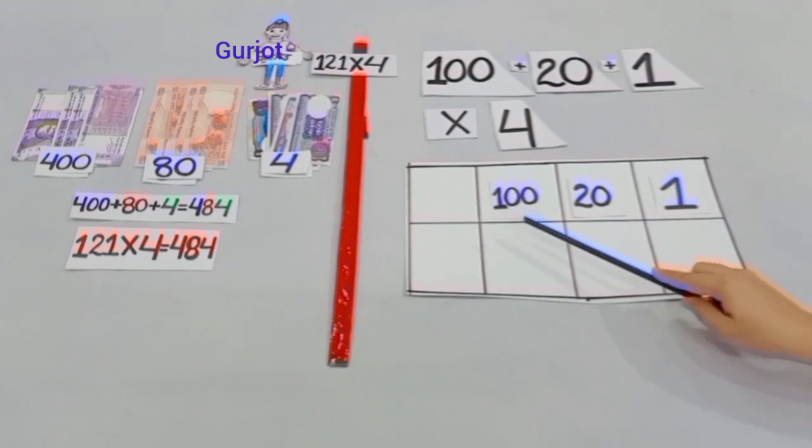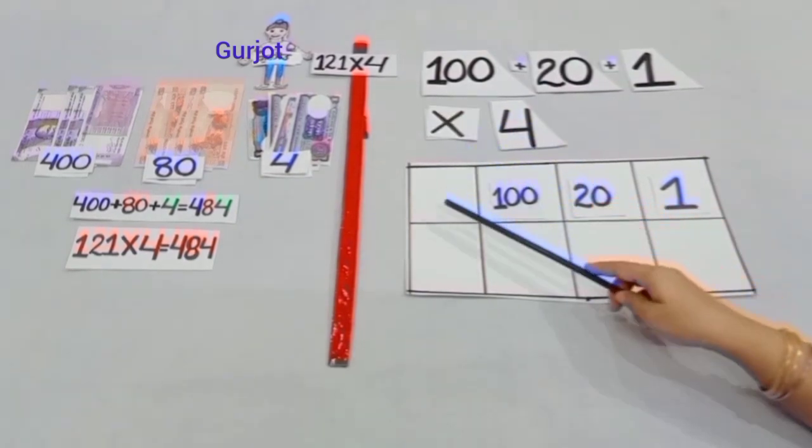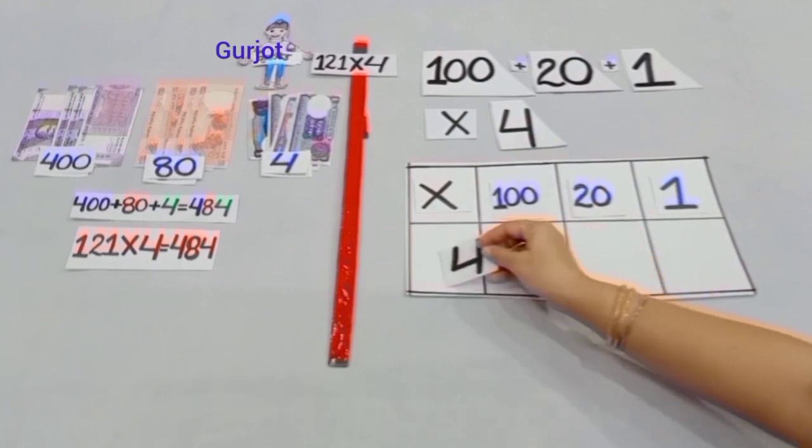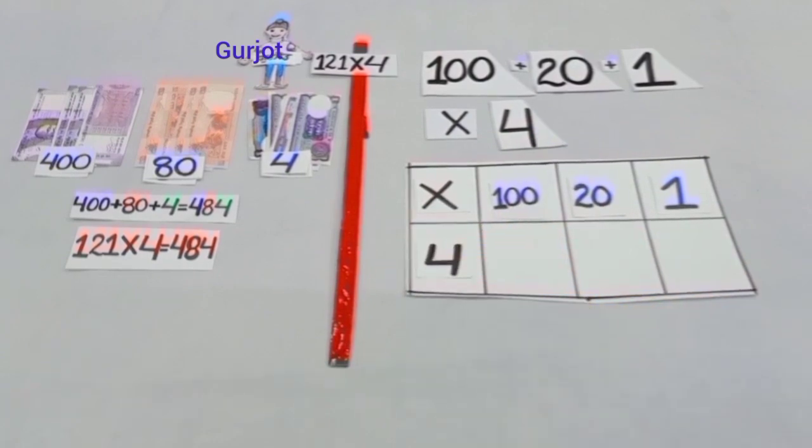Now students, we have split 121 into 100 plus 20 plus 1 and we will multiply it by 4. So let's start multiplication. But before this, students, look at this.